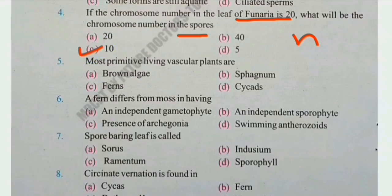Number 5: Most primitive living vascular plants are — brown algae, sphagnum, ferns, or cycads? The right answer is C, ferns.